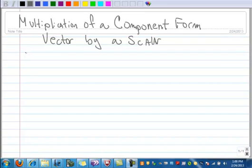All right, we want to do an example of multiplication of a component form vector by a scalar. So here's an example. Let's say vector v is the components 2 and 3.